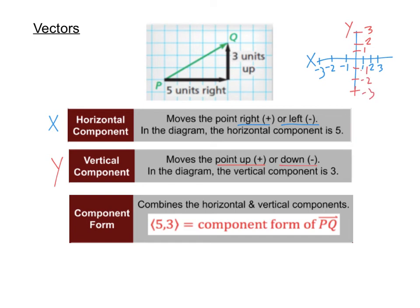The component form of a vector combines both the horizontal and vertical components. We always list the horizontal component first. So five is my horizontal component and three is my vertical component. And in words, since five is positive for horizontal, we know that that's five units to the right. Since three is positive for the vertical, positive goes up.